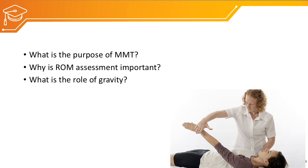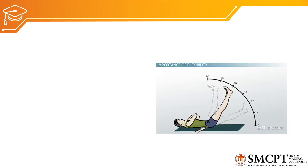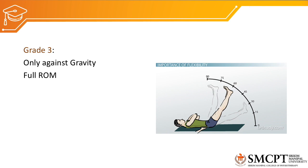Let's revise the grades of MMT. Grade 3 means the muscle is able to perform its function against gravity only, but cannot perform against any additional resistance. For example, psoas and iliacus can take the hip joint through the full range of motion against gravity only — that would be graded as grade 3.